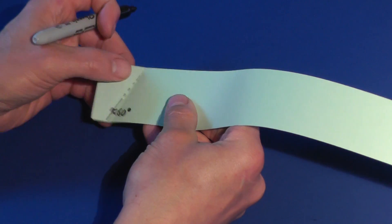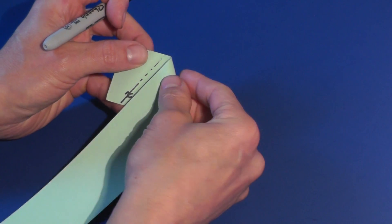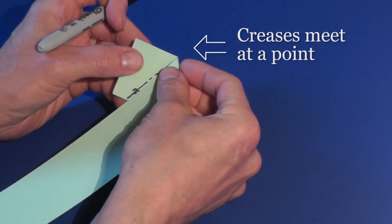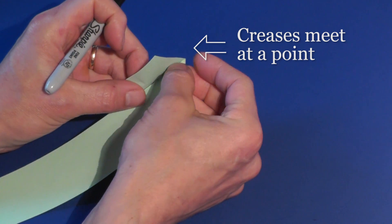Fold the top edge down along the crease that you just made. Make sure that the new crease meets the old crease at a point.